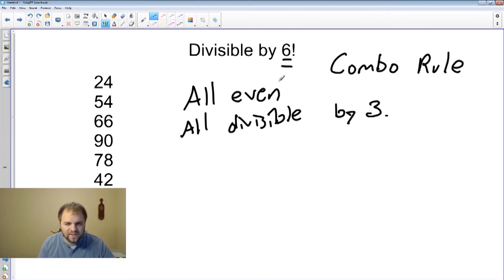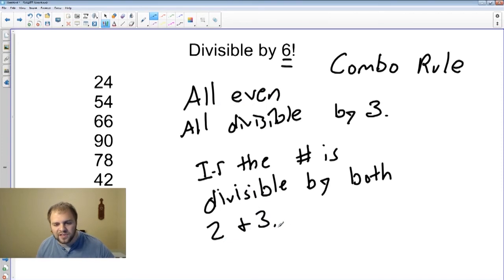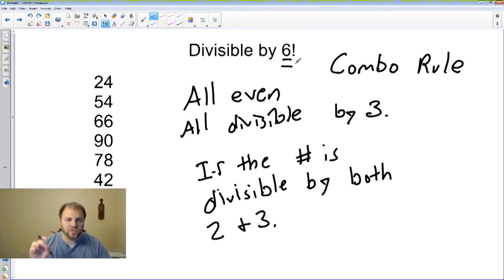To be divisible by six, the rule is if the number is divisible by both two and three. So if the number is divisible by two and three, then it is divisible by six. It has to be divisible by both of them though. There is not any number that's divisible by six that's divisible by just one of those. It has to be divisible by two, in other words it has to be even. It has to be divisible by three, in other words the sum of the digits must be divisible by three. If you find both those rules, you combine them, that means it's also divisible by six.